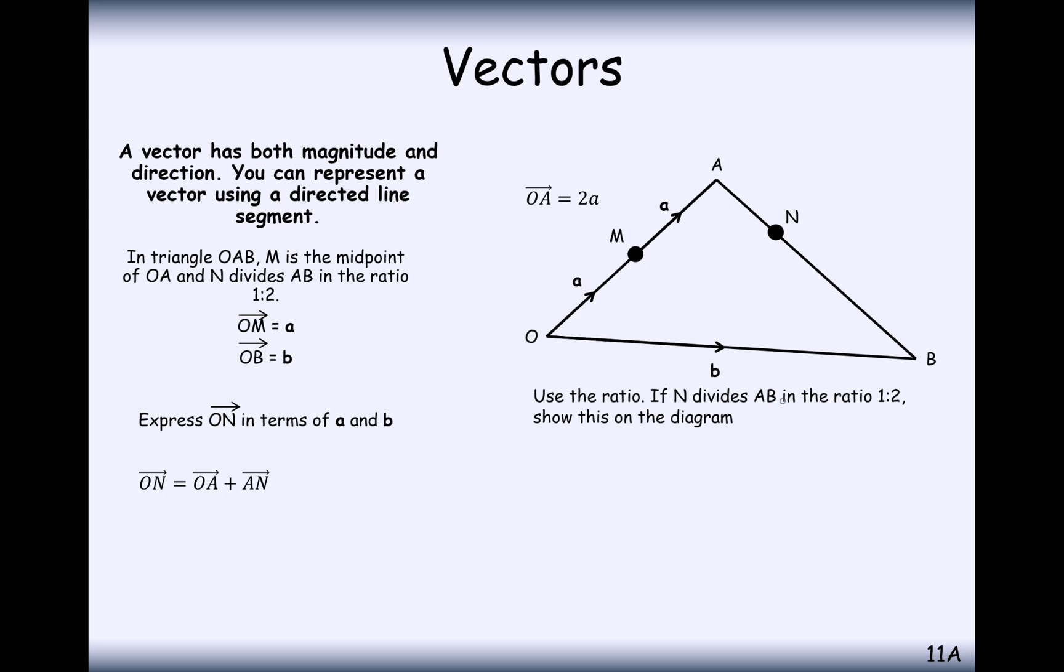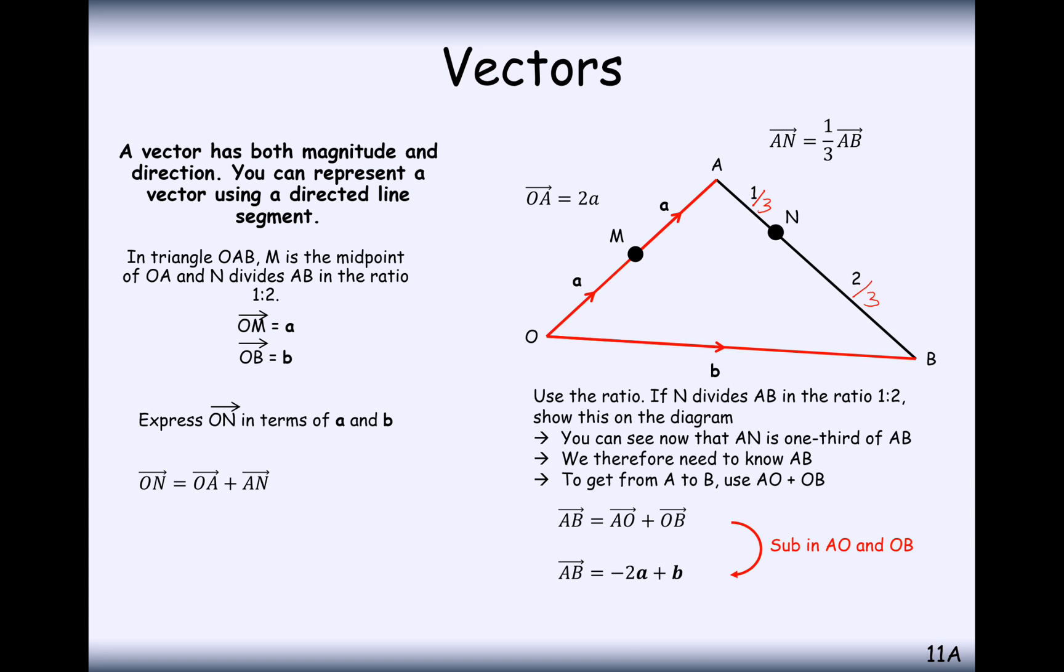We've got from O to A. Now the ratio here is the important bit. Using the ratio, if N divides AB in ratio 1 to 2, we could show this on a diagram: this is one part and this is two parts. Effectively we've got a one-third part and a two-thirds part. I would always think of these as fractions rather than ratios. So A to N is a third of the distance from A to B.